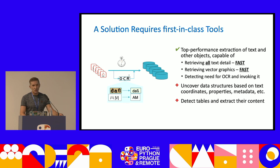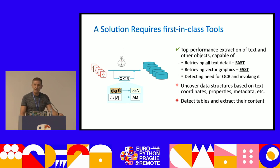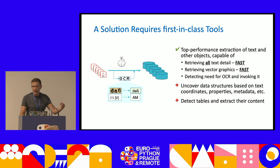All this has to be fast. Text extraction must be fast, and it must include all text detail — not just words and characters, but all metadata: color, font, font size, and so on. The green tick marks indicate what I'm covering in the next slides; the red bullet points indicate what is also required but not detailed here.